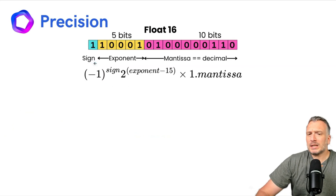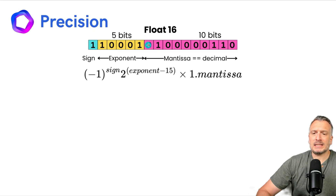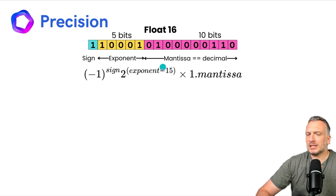Now let's look at Float16. In Float16, we give the first digit to the sign, the next 5 bits to the exponent, and the next 10 bits to the mantissa. The formula is slightly different because we subtract the exponent by 15 instead of 127.